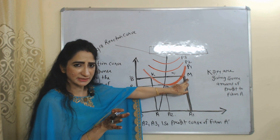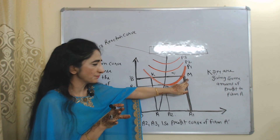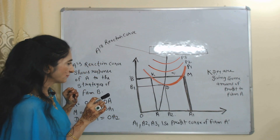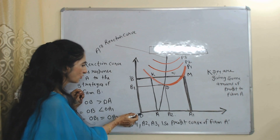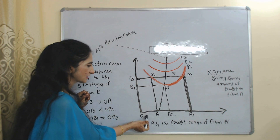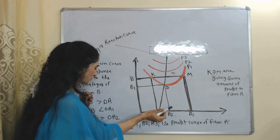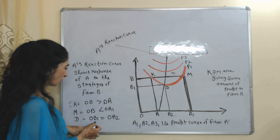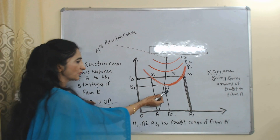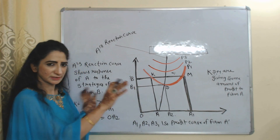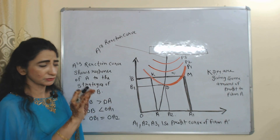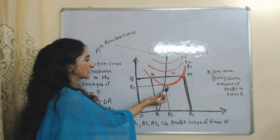At point M, firm A is taking a higher price compared to firm B. At point D, firm B is taking price OB1 and firm A is taking price OA2. OB1 is equal to OA2, meaning at point D both firms are taking the same price — prices of both firms are equal to each other.